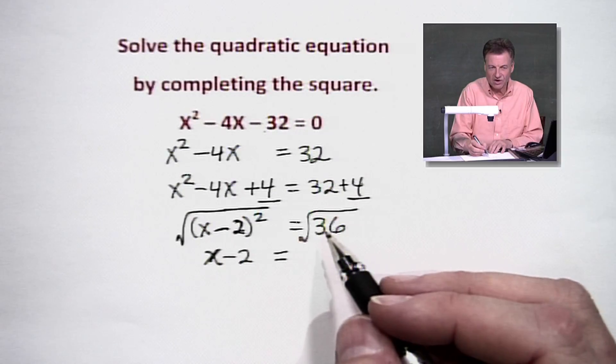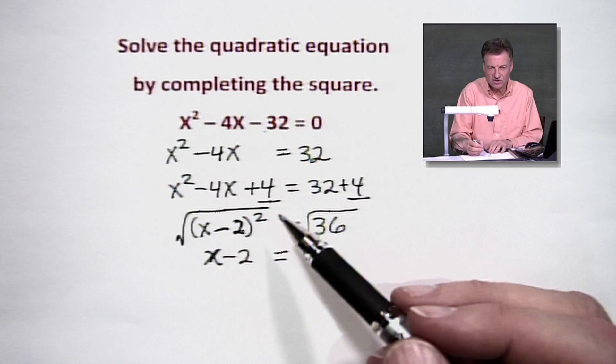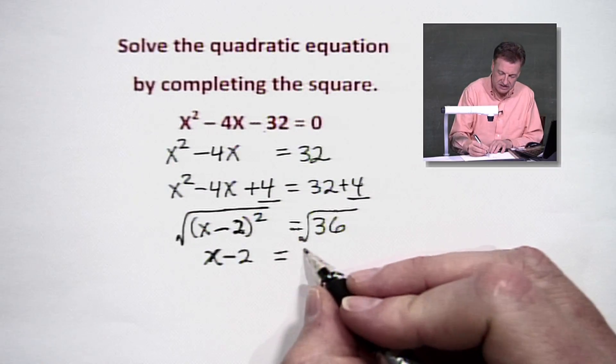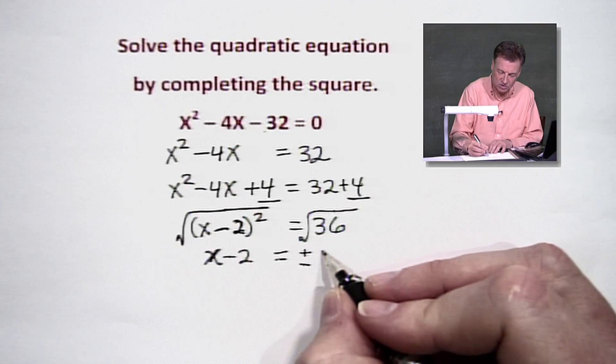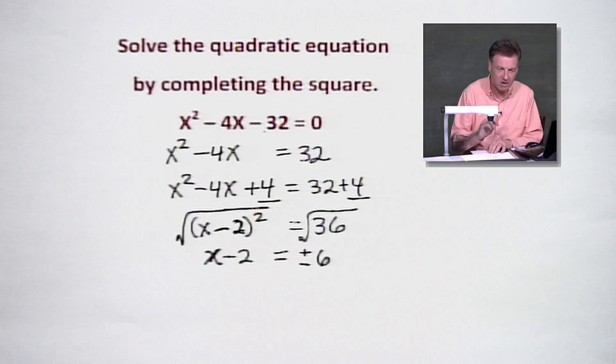And over here, we've got two possibilities. Remember, a square root of 36, when we're dealing with an equation situation, you could have a positive 6 or a negative 6 because both of those, when you square them, give you the 36. So there's our possibilities.